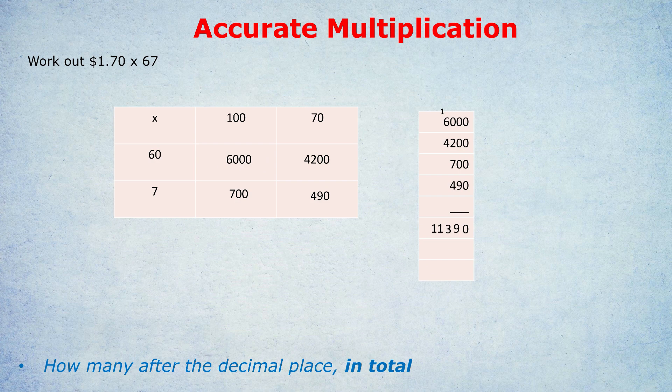Finally, what about the decimal point? Remember at the beginning we pretended the decimal point wasn't there. Well now it's time to bring in the decimal point. As I've written down below, you count how many numbers are after the decimal places in total. Now with the number 67, there were no numbers after the decimal point. There were no decimal points. But with 1.70, there were two numbers after the decimal point. So in total, between the two numbers, there are two numbers after the decimal point. And therefore in our answer, there needs to be two numbers after the decimal point, meaning the decimal point would go after the three: 113.90, giving us two numbers after the decimal point.